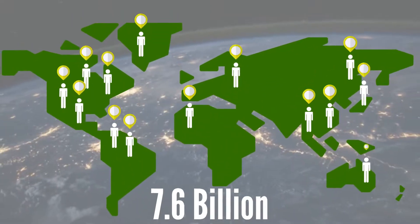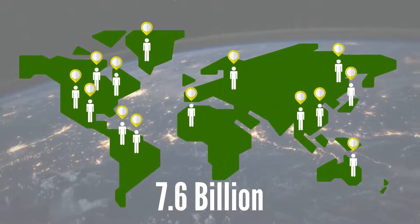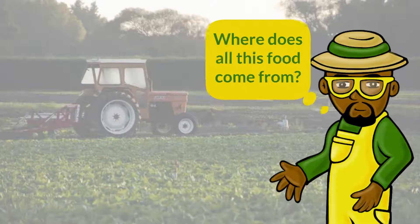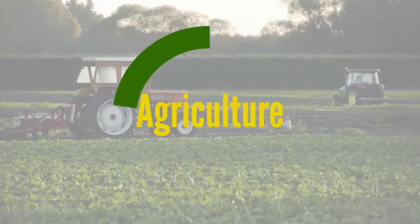Currently there are 7.6 billion people in the world and every day they rely on food for survival. Where does all this food come from? Agriculture.